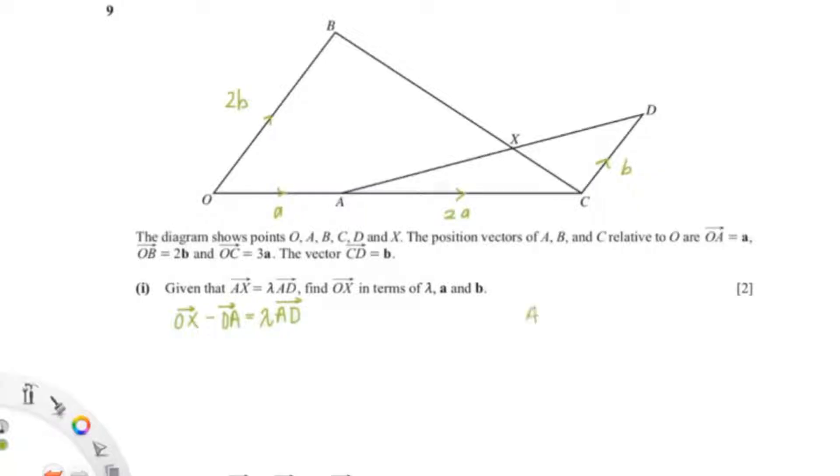So now let's find AD. AD equals to AC plus CD. Since we have AC, AC is 2A and CD is B. So OX equals to lambda AD plus OA. So that would be lambda times 2A plus B plus A.